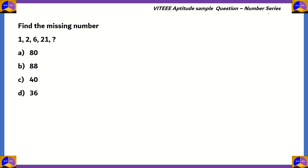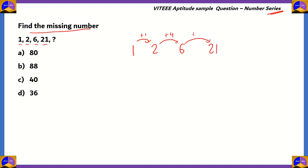Let's look at the next question. This is a question from number series. Find the missing number. We have 1, 2, 6, and 21 present here. The options given are 80, 88, 40, 36. Let's write the number series down and find out the gaps between the elements. Between 1 and 2, we have a gap of 1 — 1 plus 1 gives you 2. Next, 2 and 6: 2 plus 4 gives you 6. Then 6 plus 15 equals 21. There isn't any obvious connection from these gaps, so we need to think deeper.